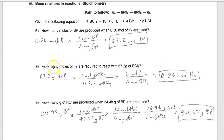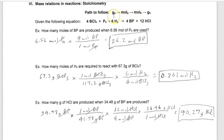Try another one. How many moles of H2 are required to react with 67.3 grams of BCl3? We know we've got 67.3 grams of BCl3 and we're trying to get to moles of H2. We're starting with grams of something and trying to get to moles of something else — from grams of A to moles of B. The roadmap says you can't get there in one step, but you can get there in two. If I'm in grams of BCl3, where do I need to go next? Moles of BCl3.